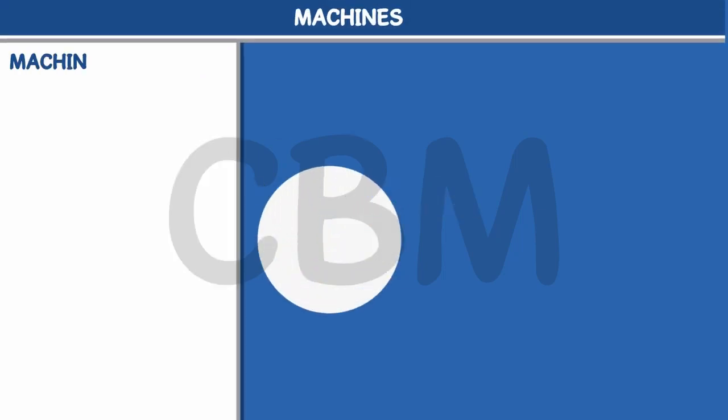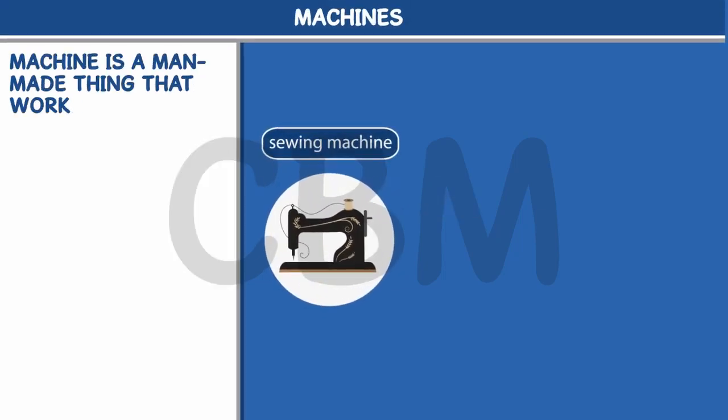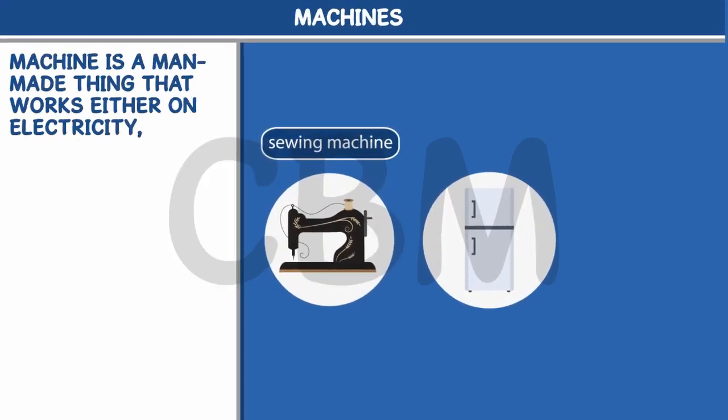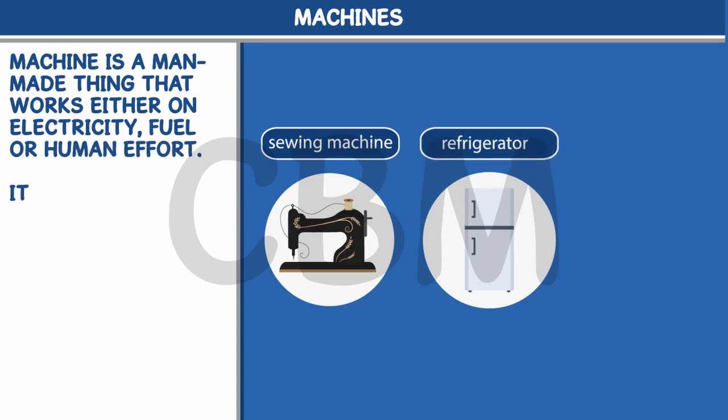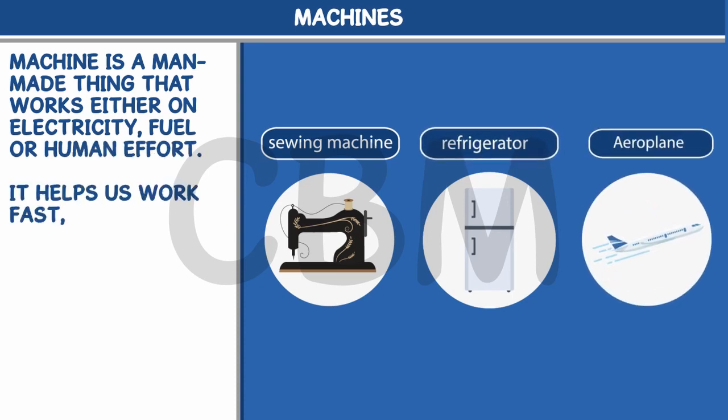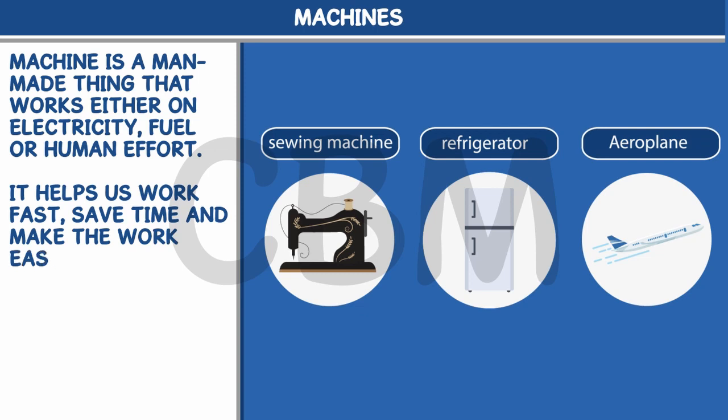Machines. A machine is a man-made thing that works either on electricity, fuel, or human effort. It helps us work fast, save time, and make the work easy and simple.